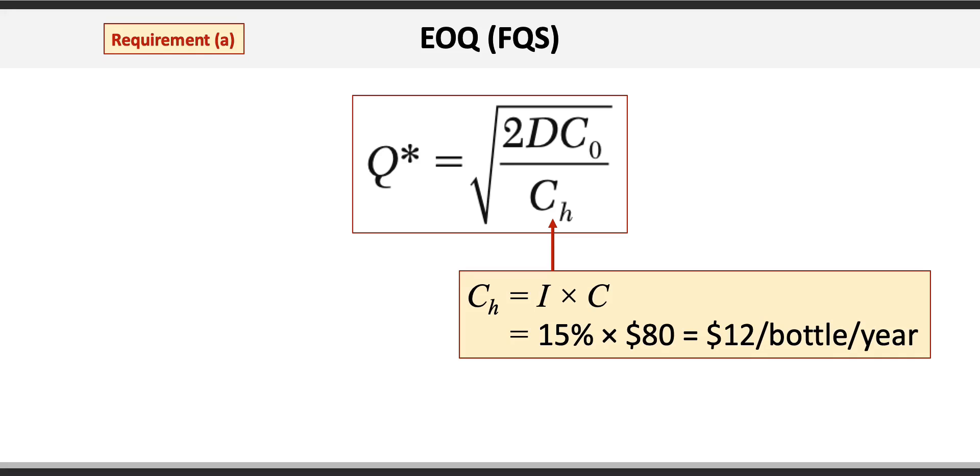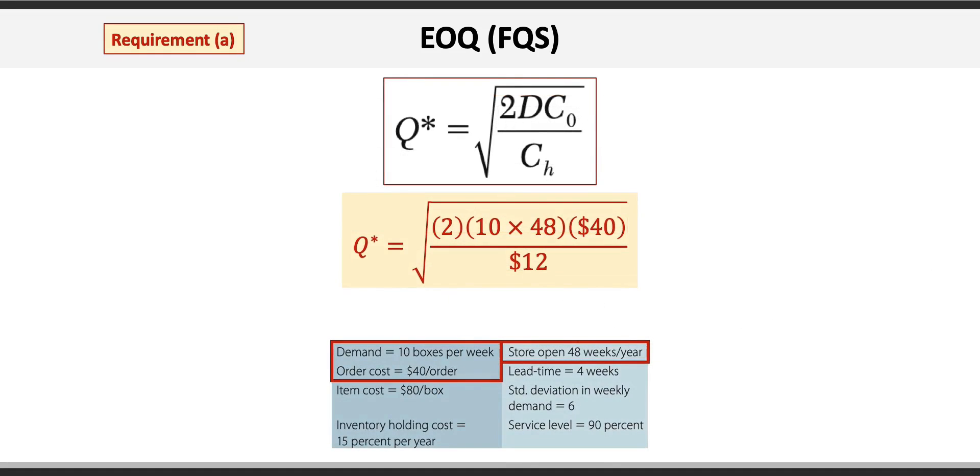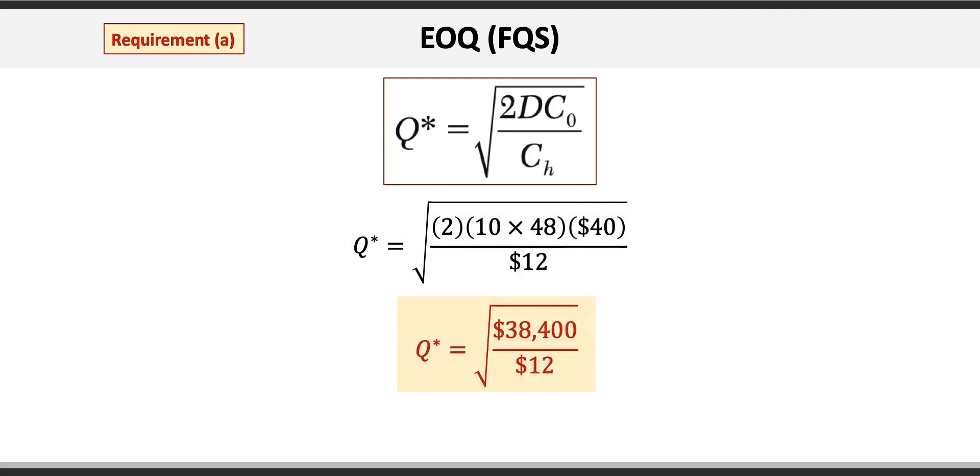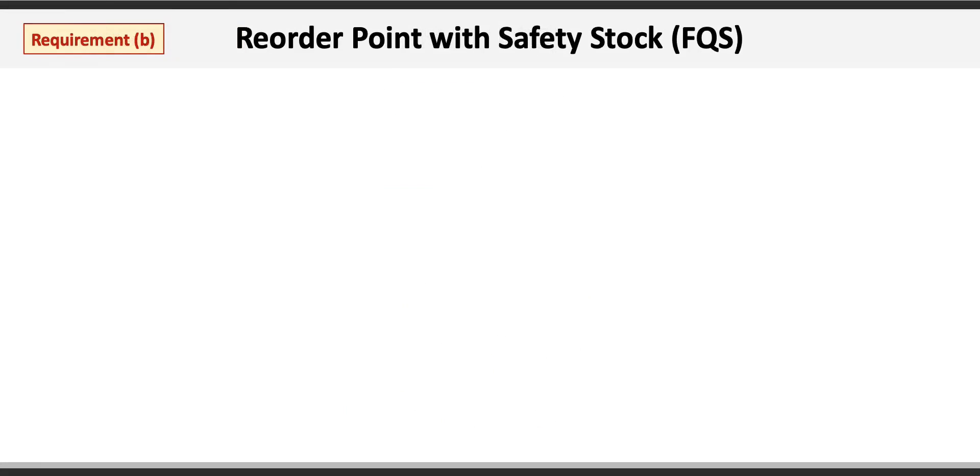Now we can finish the EOQ calculation where Q equals the square root of 2 times 10 boxes per week times 48 weeks per year times the $40 order cost divided by the $12 holding cost. EOQ equals the square root of 38,400 divided by 12, which equals 56.67 or 57 bottles.